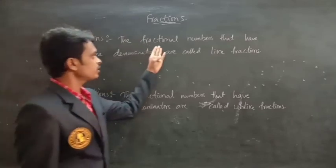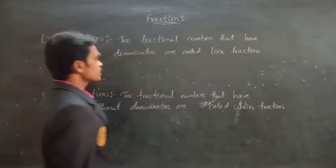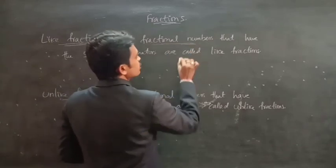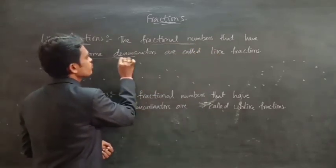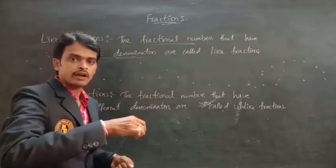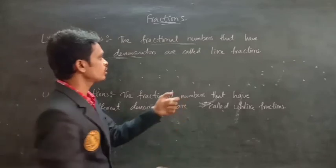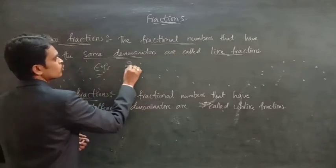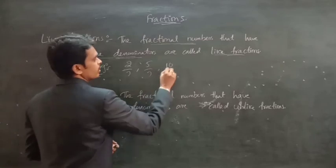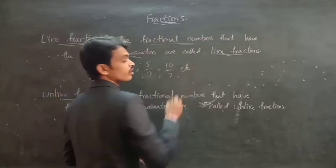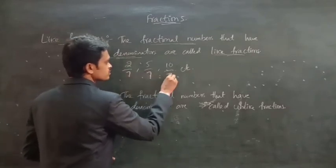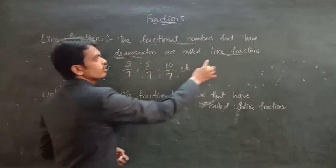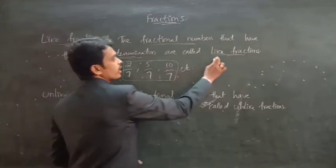Like fractions. Fractional numbers which have the same denominators are called like fractions. For example: 2 by 7, 5 by 7, 10 by 7. The denominator is the same — 7, 7, 7. This type of fractions are called like fractions.